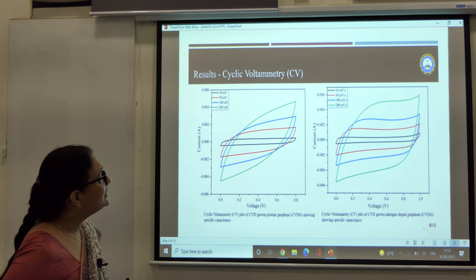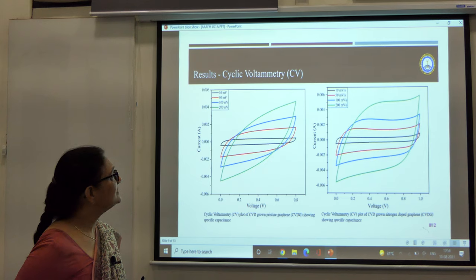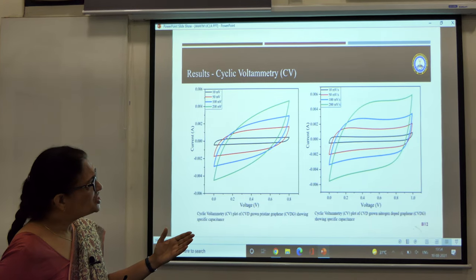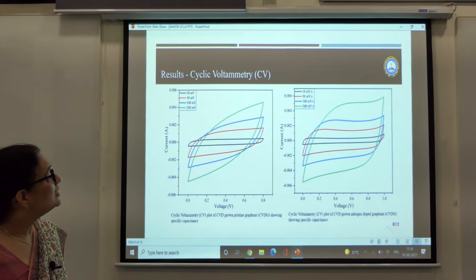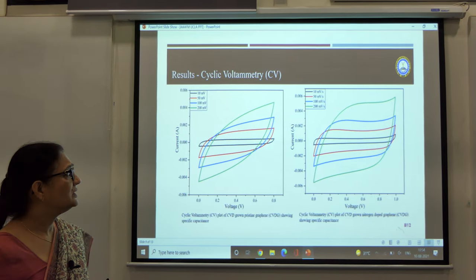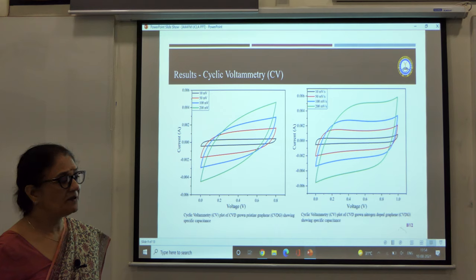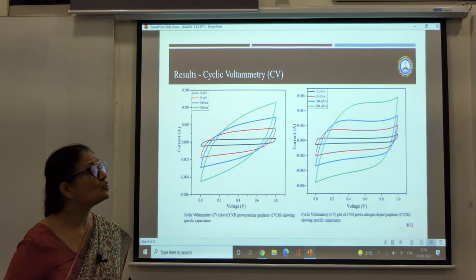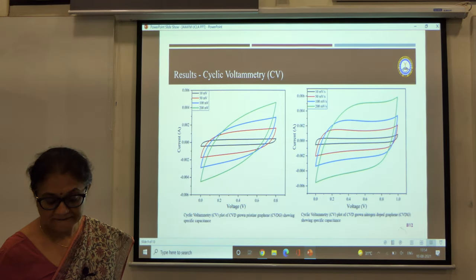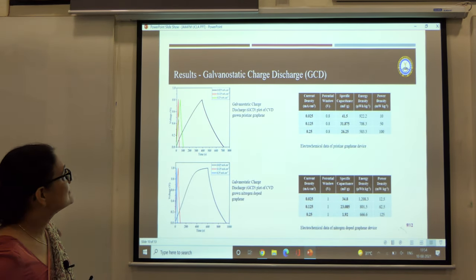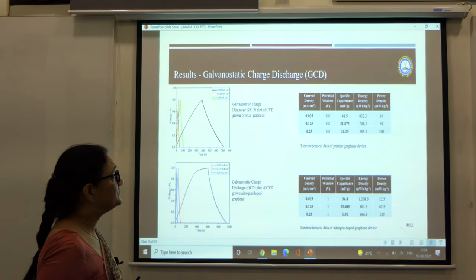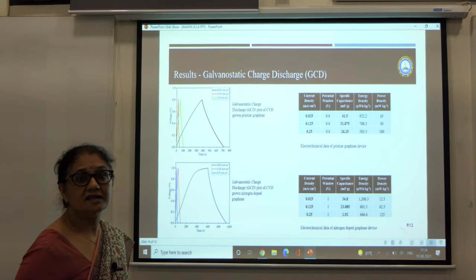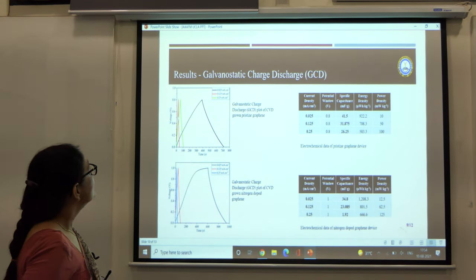When we checked the cyclic voltammetry of the nitrogen doped graphene, we could see very clearly there is an increase in the area of the plot. Moreover, the shape of the curve is moving towards a square shape. It's not exactly the ideal EDLC behavior; it has some curve at the top, so there is some pseudo capacitance also showing in these samples. The doping actually results in some pseudo capacitive behavior, and the combination of the two EDLC and pseudo capacitive behavior may increase the electrochemical performance.